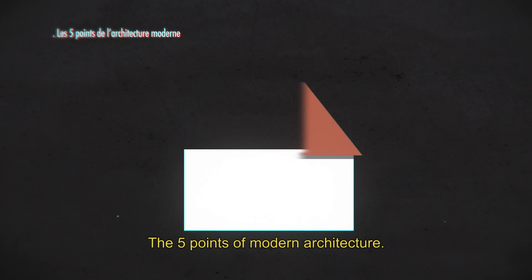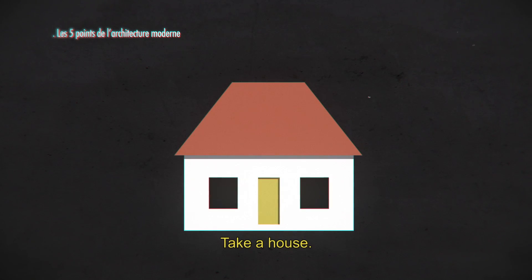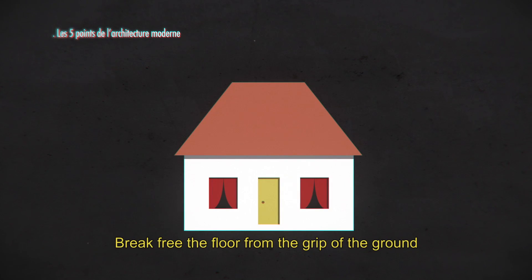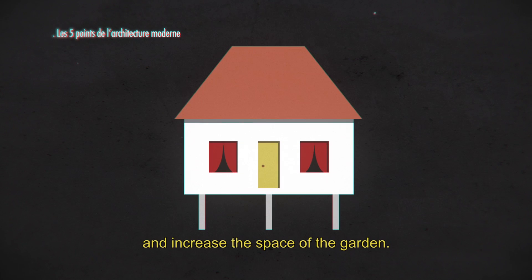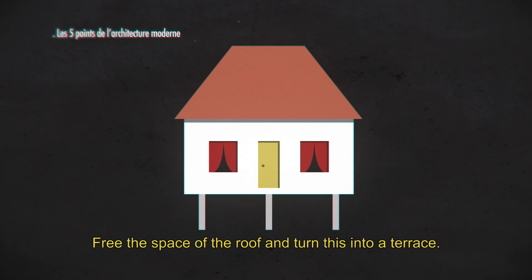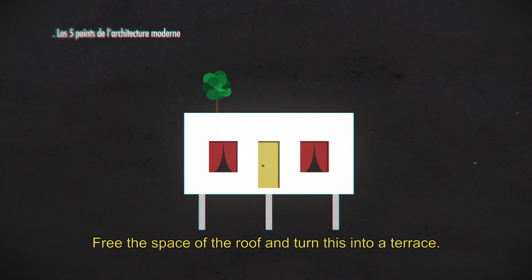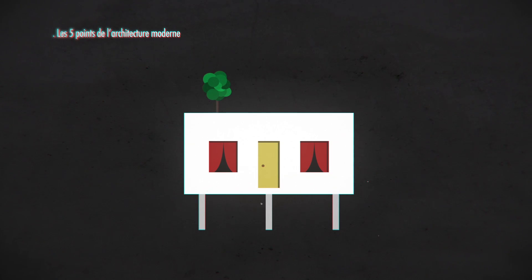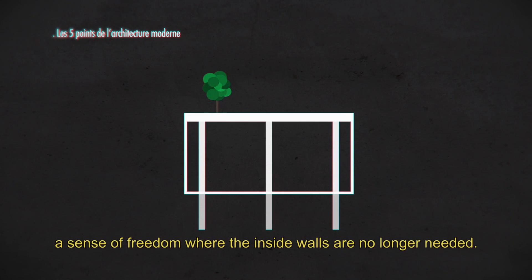The five points of modern architecture. Take a house: break free the floor from the grip of the ground and increase the space of the garden. Free the space of the roof and turn this into a terrace. Embrace the free plan — a sense of freedom where the inside walls are no longer needed.